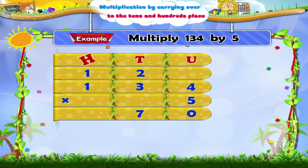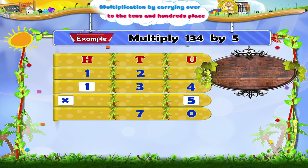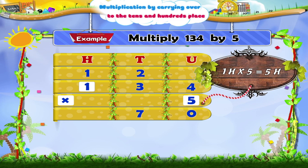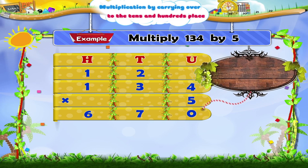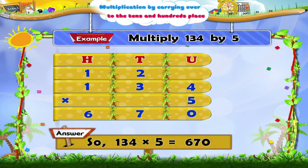Now multiply the hundredths digit 1 in 134 by 5. We get 5 hundredths. Add to this the carried over 1. We get 6 hundredths. Write it in the product in the hundredths place. The product is six hundred and seventy.